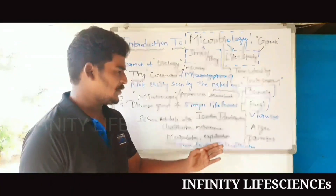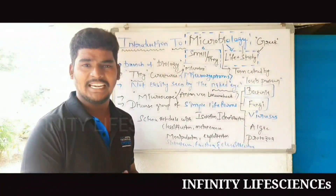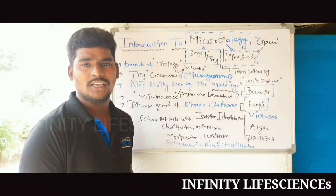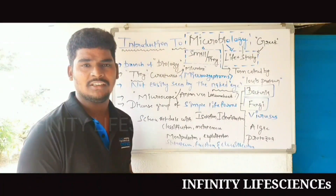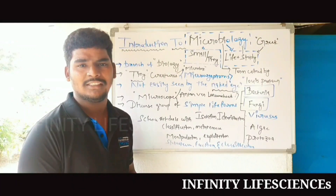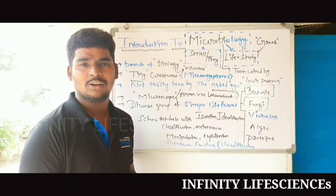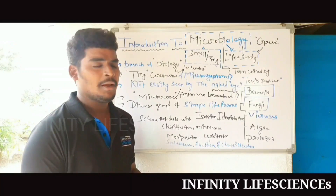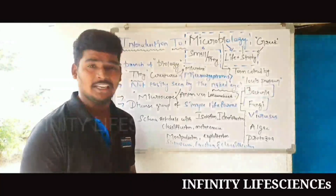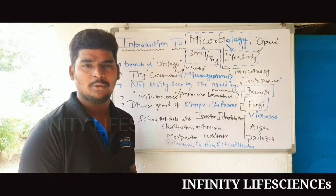Isolation means simply separation — we separate microorganisms from mixed cultures. Identification is the state of being identified. In microbiology, with the help of magnifying devices like a microscope, we observe the morphology and colony characteristics, and we perform Gram staining techniques to identify different kinds of microorganisms.